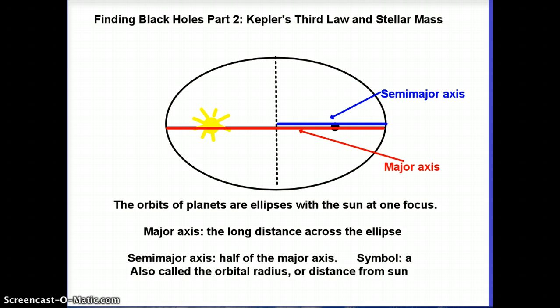Kepler had three laws that he came up with relating to planetary orbits. We're going to sort of focus on one of them now.